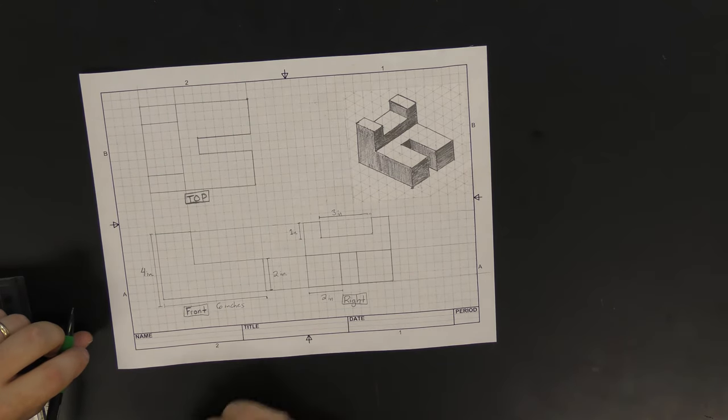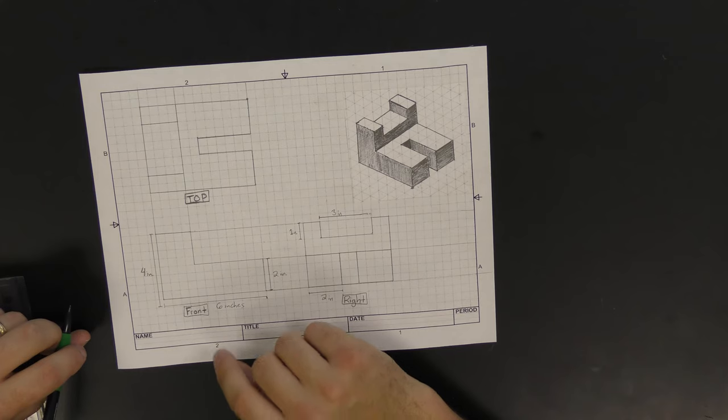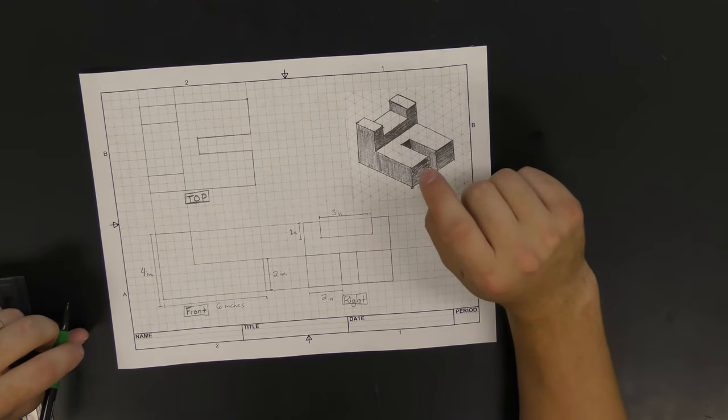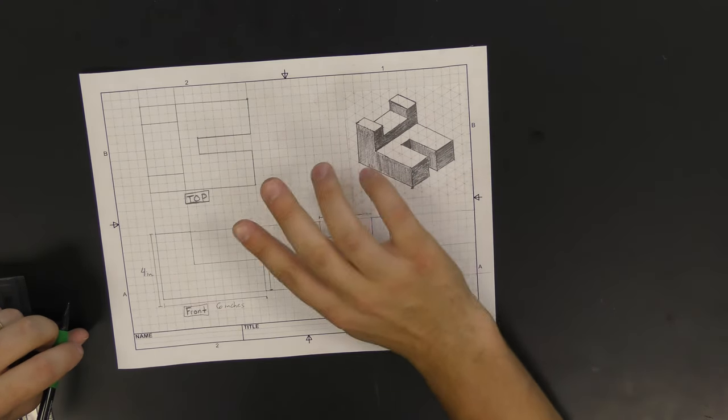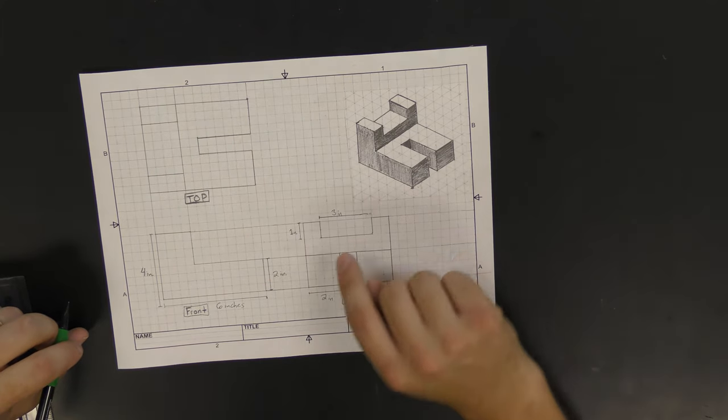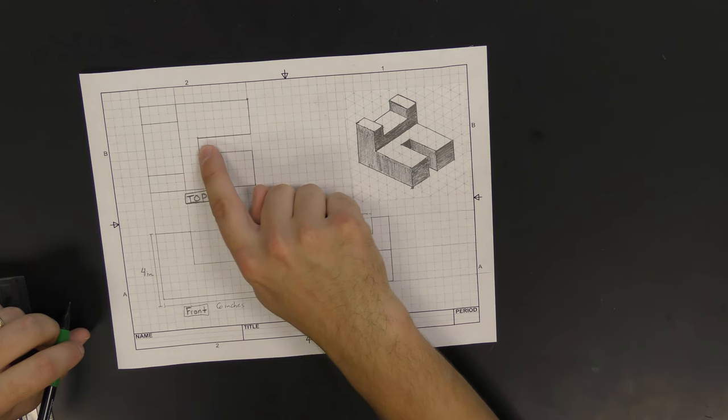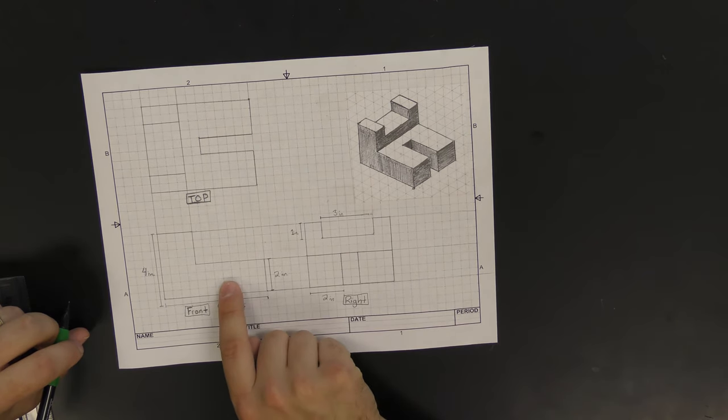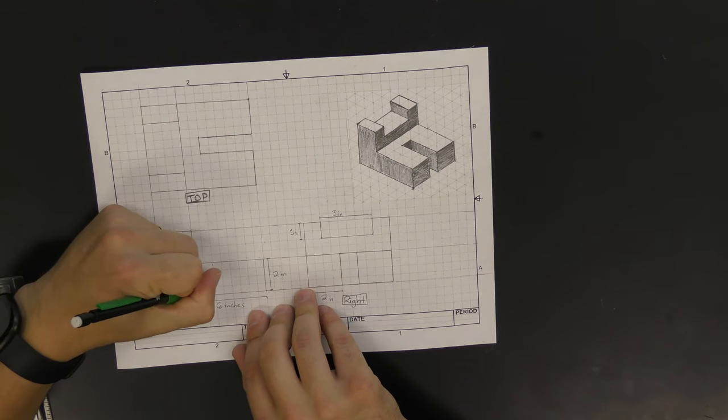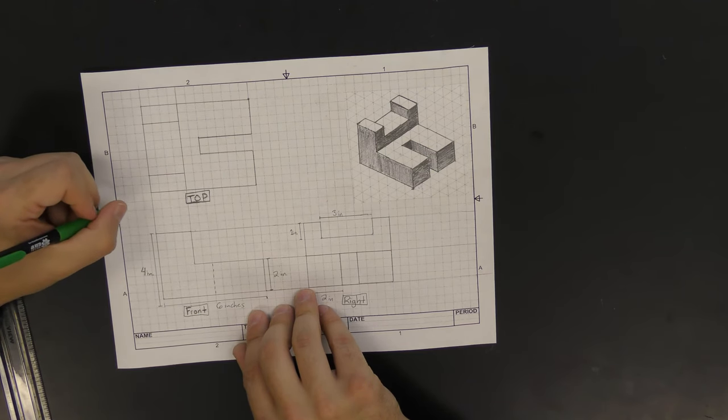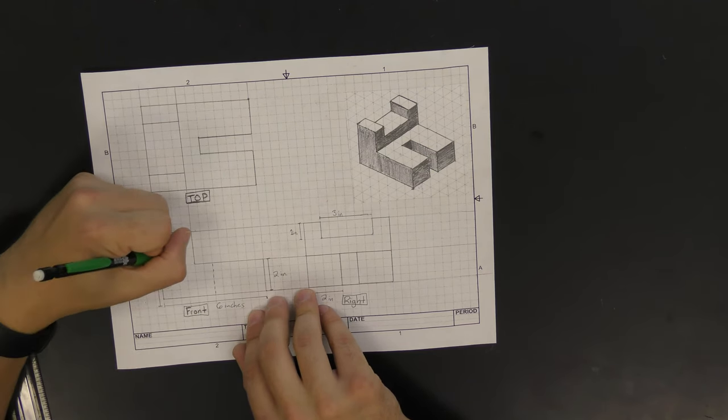The last thing we will add to our multi-view sketches here are called hidden lines. Hidden lines show us that on a certain face, there is a part of that object that's missing, but it's hidden behind part of the geometry of that shape. For this specific object, we have two hidden lines and they're both on the front view. One is horizontally above the top and the other is vertically where that cutout takes place that we can see from the top view.